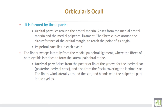The orbicularis oculi is formed by three parts. The orbital part lies around the orbital margin and arises from the medial orbital margin and the medial palpebral ligament. Its fibers curve around the circumference of the orbital margin to reach the point of origin. The palpebral part lies in the eyelid, and its fibers sweep laterally from the medial palpebral ligament where fibers of both eyelids interlace to form the lateral palpebral raphe.